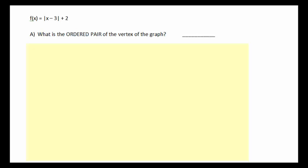So the vertex will be where that sharp turn is. The way to get that is to get the X value, set the absolute value quantity equal to 0, and solve for X.